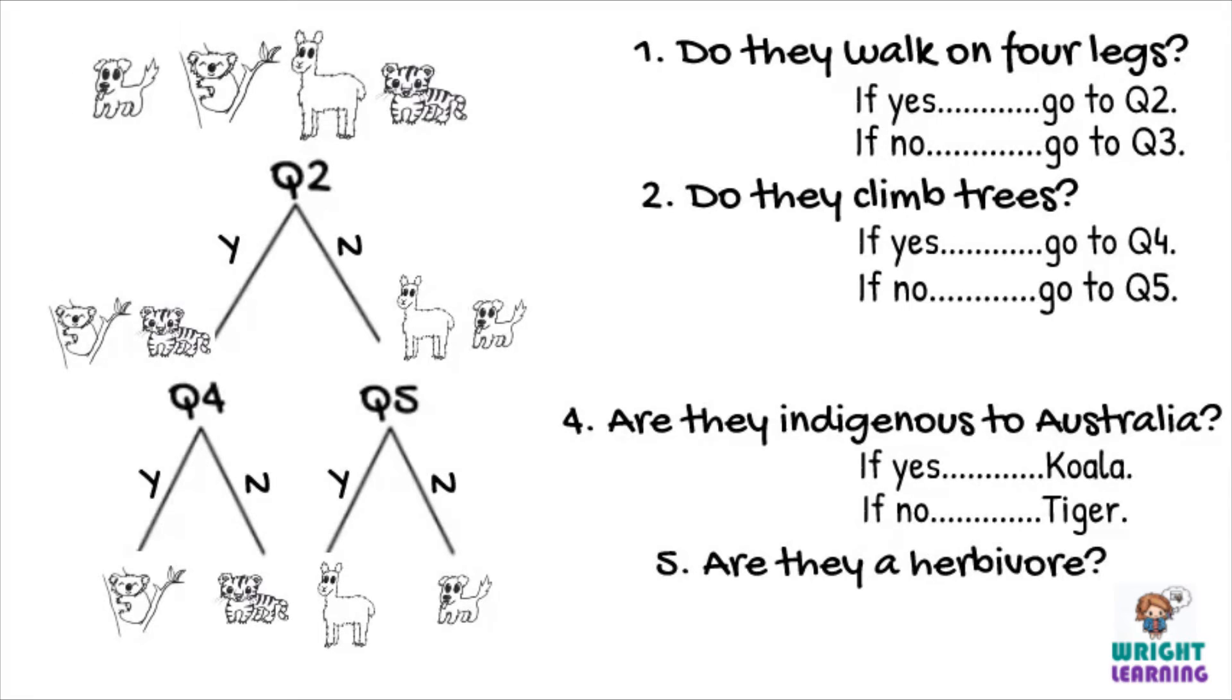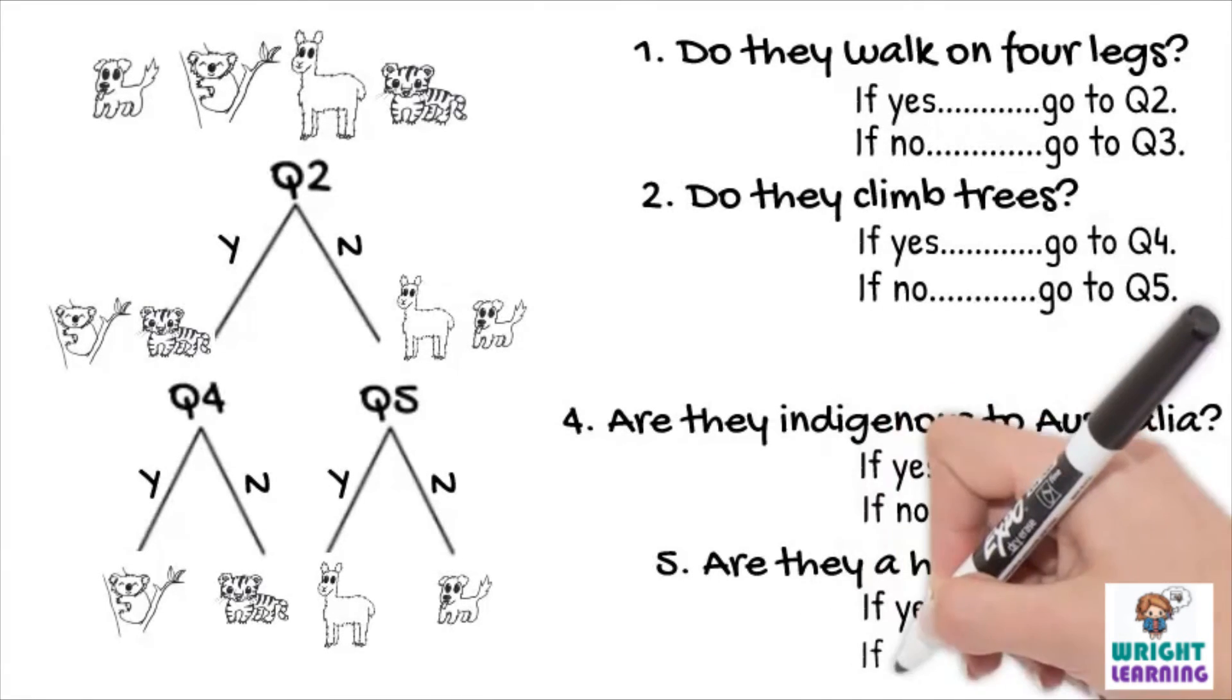So under question 5, we write, if yes, alpaca. If no, dog.